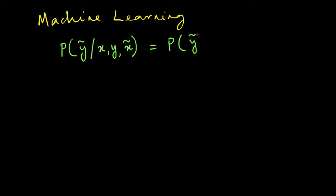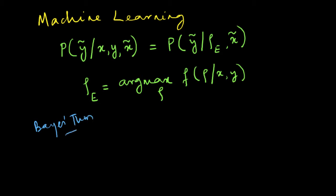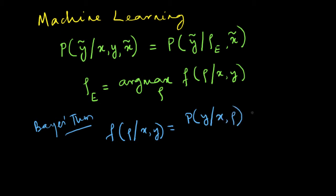This is equal to the probability of the output given some parameter values rho_e, which is the estimate, and the input value. This estimate for rho_e is basically given by argmax over all rho of the distribution of rho given some input-output values. We compute this argmax using Bayes theorem, which says that the distribution of rho given x, y is equal to the probability of y given x, rho, times the distribution of rho, divided by the probability of y given x.